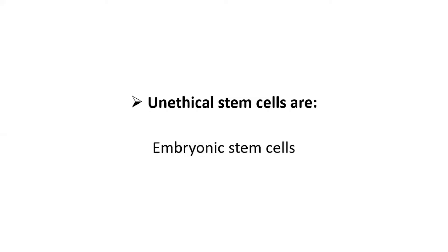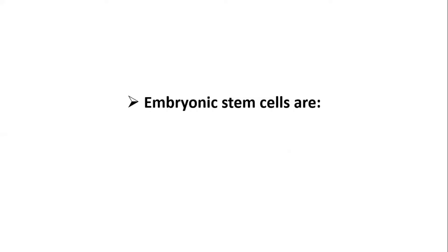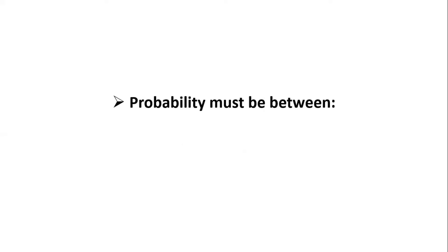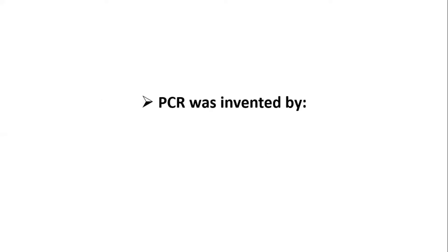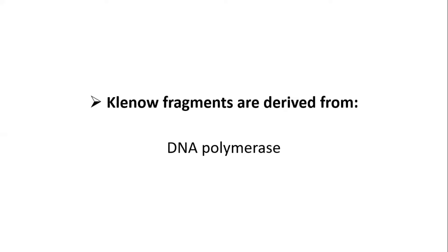Unethical stem cells are embryonic stem cells, derived from the inner mass of blastocyst. Probability must be between plus one and minus one. P53 is activated by phosphorylation. DNA in electrophoresis moves from cathode to anode. PCR was invented by Kary B. Mullis. Klenow fragments are derived from DNA polymerase.